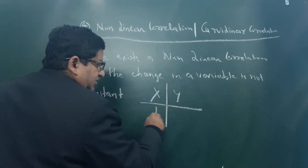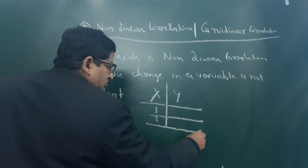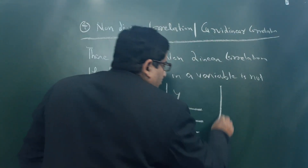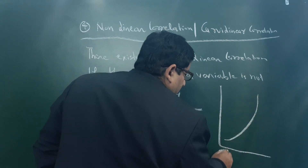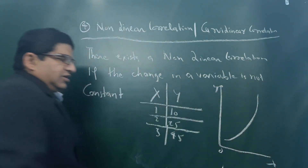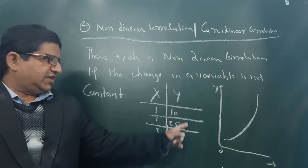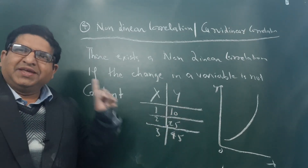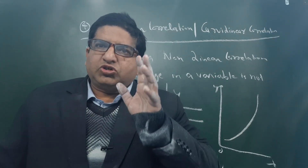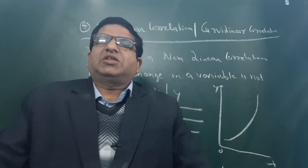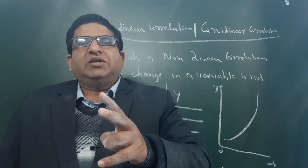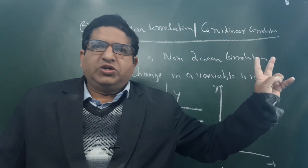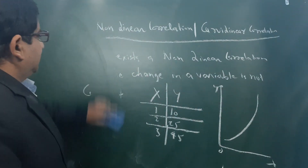For example, if x is 1, 2, 3 and y is 10, 25, 45 — y is not moving in a constant proportion. If y were 10, 20, 30 it would be linear correlation, but here y jumps from 10 to 25 to 45, so it is not moving in a constant proportional — hence this is non-linear (curvilinear) correlation.